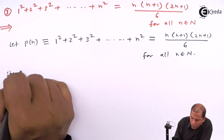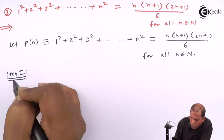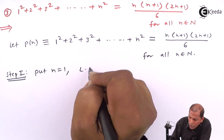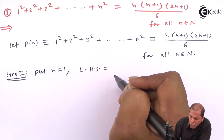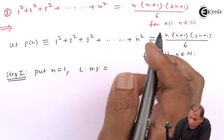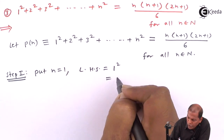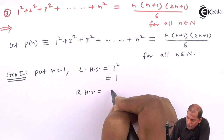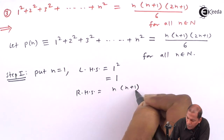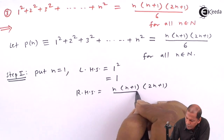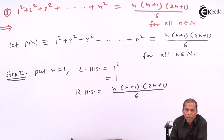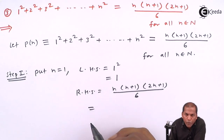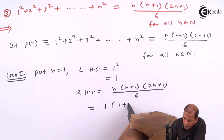Now step number 1: put n equal to 1. So the left hand side equals the first term, that is 1 square, which gives us 1. Now we consider the right hand side, which equals n(n+1)(2n+1) divided by 6. For n equal to 1, we substitute 1: so 1 into (1 plus 1).